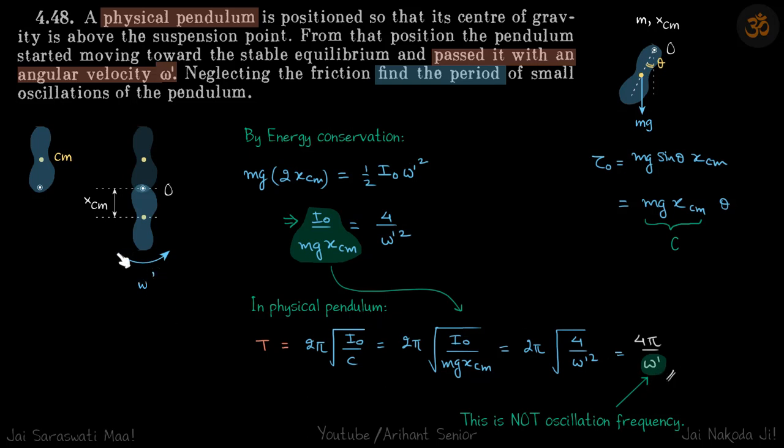This omega dash is the actual angular velocity of the body when it crosses the equilibrium position. This is not the oscillation frequency. If you want to know the oscillation frequency, you can equate this to 2π by omega, and you will see omega comes to be omega dash by 2. That will be the oscillation frequency.